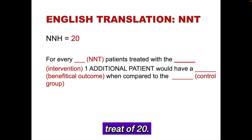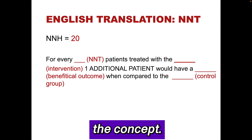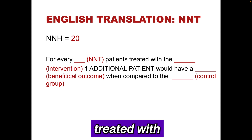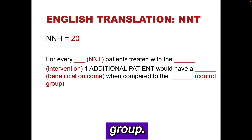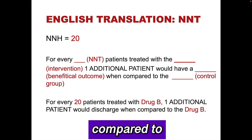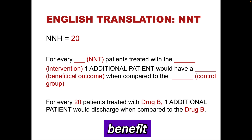We calculated a number needed to treat of 20. It is important to express this in plain English using the study parameters — if you cannot do this, you don't truly understand the concept. We will use the following template: for every [NNT] patients treated with the intervention, one additional patient would have a beneficial outcome compared to the control group. The phrase 'additional patient' is essential. This becomes: for every 20 patients treated with drug B, one additional patient would be discharged from the ED compared to drug A. The lower the number needed to treat, the more patients will benefit from the intervention.